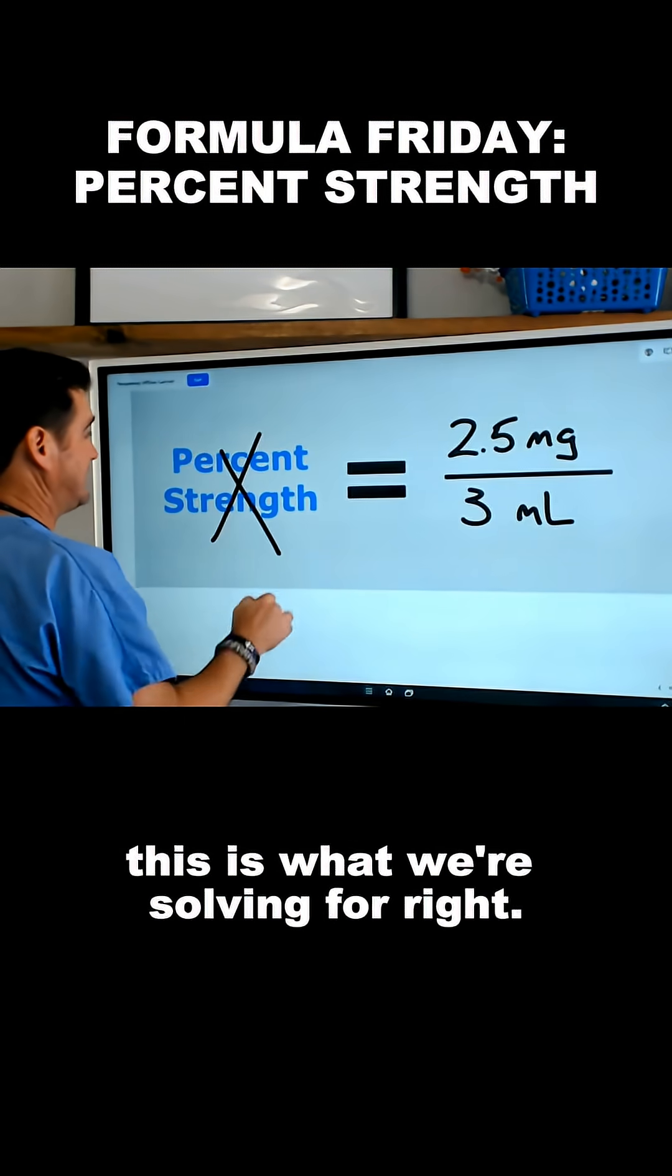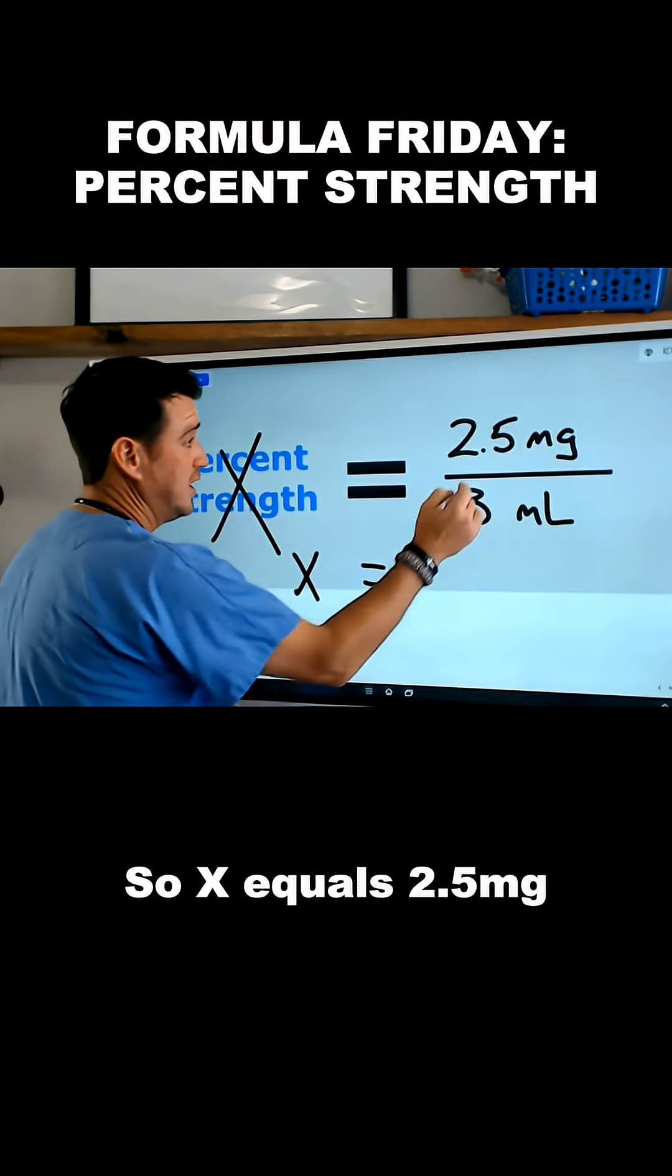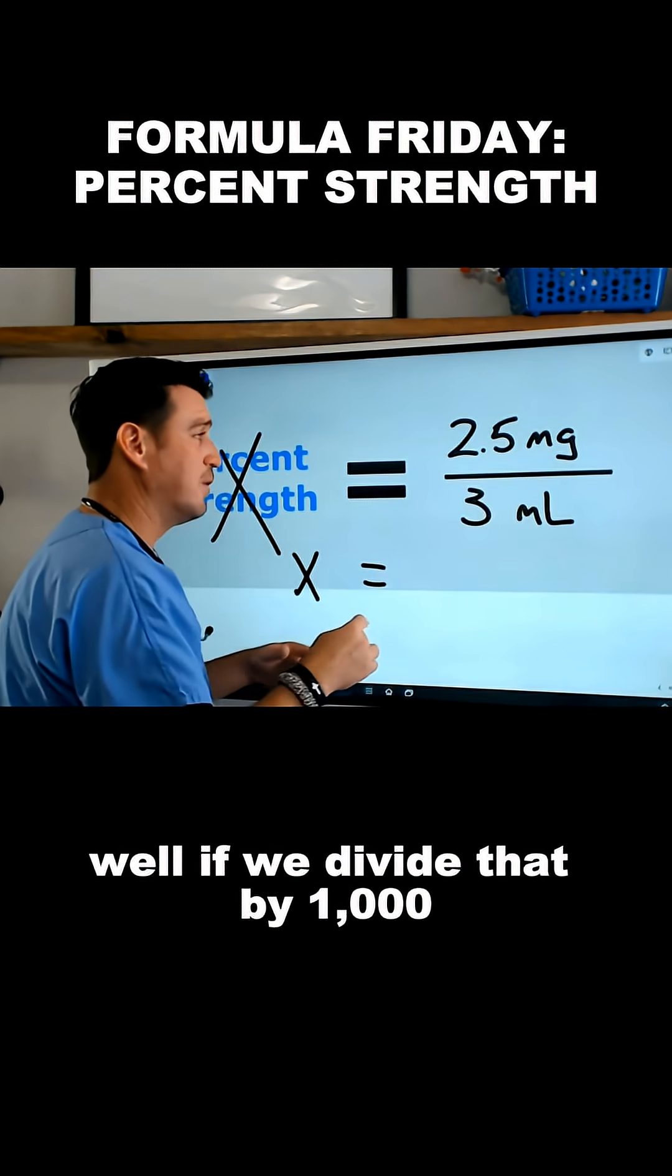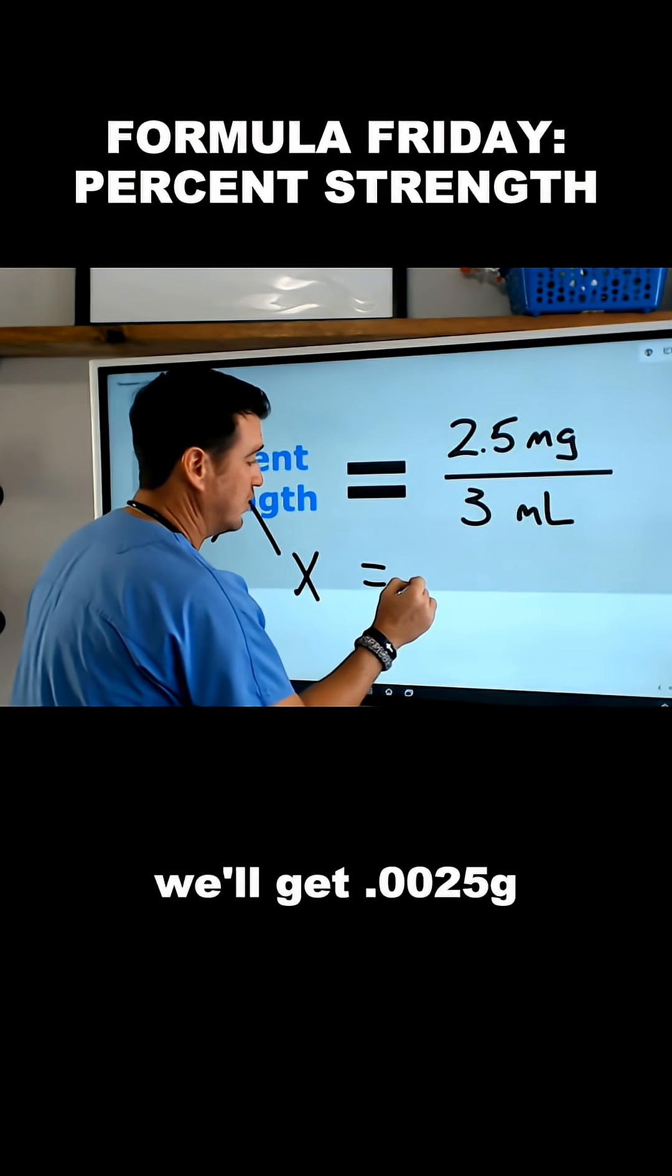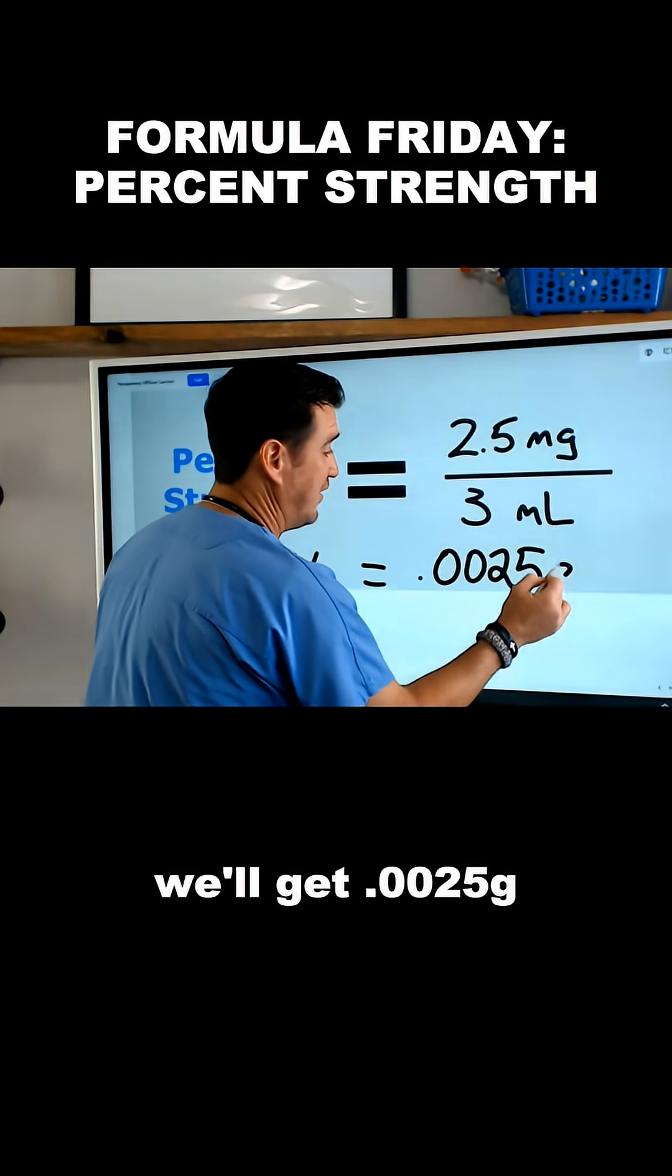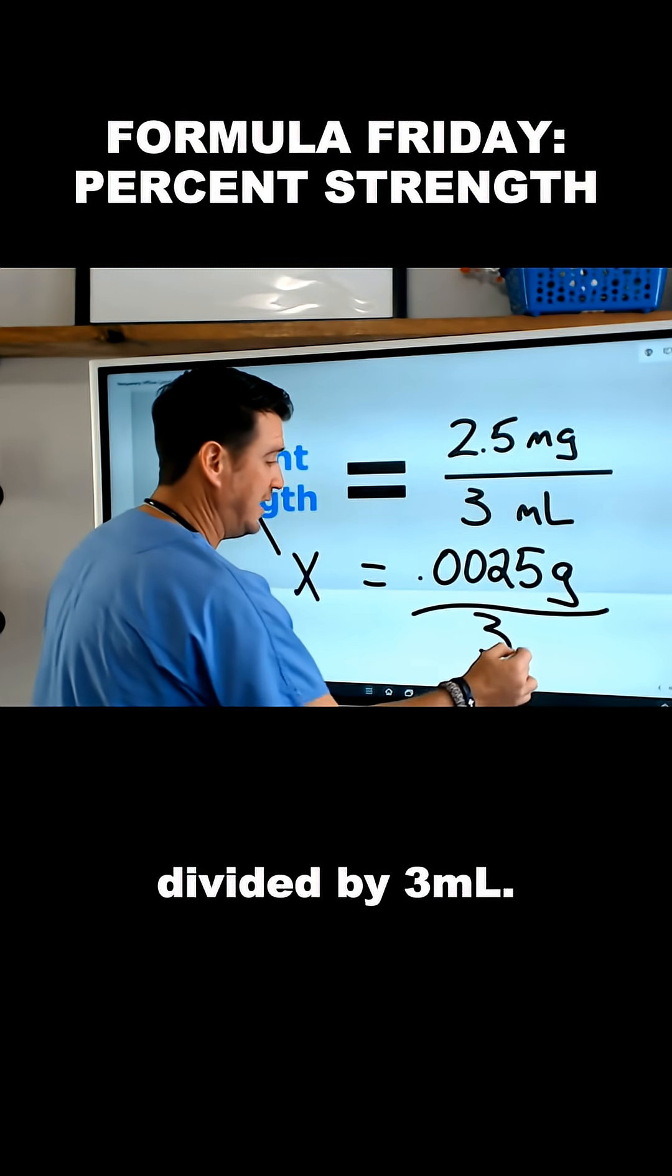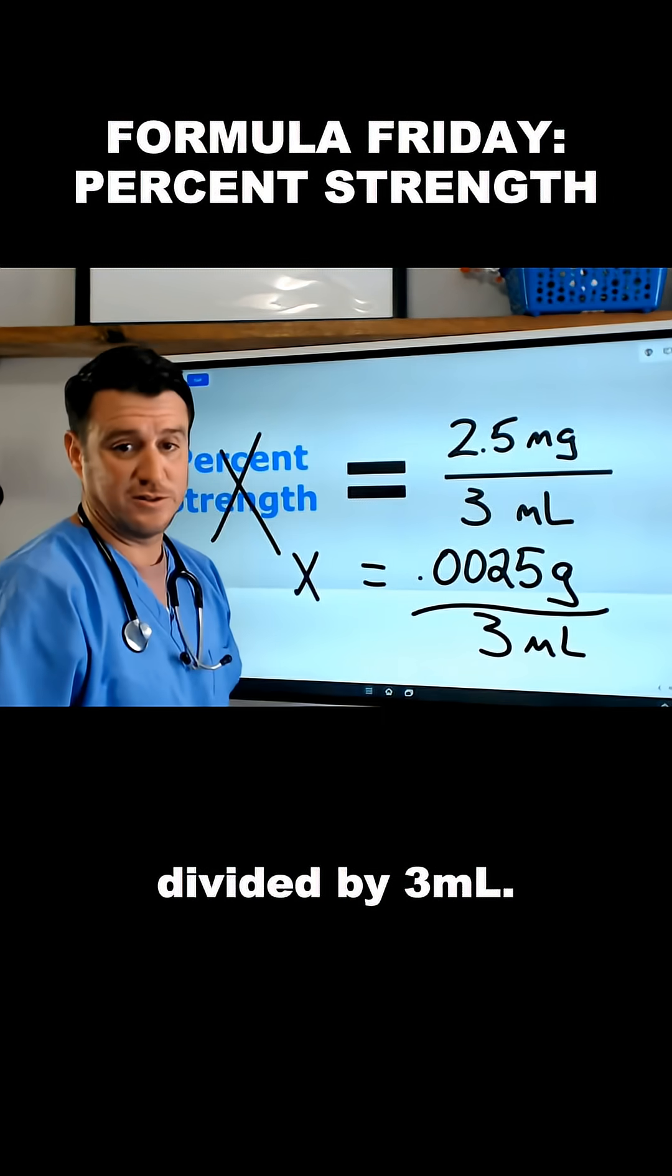So what we're really saying here, and this is going to become X, this is what we're solving for, right? So X equals 2.5 milligrams. Well, if we divide that by a thousand, we'll get 0.0025 grams divided by 3 milliliters.